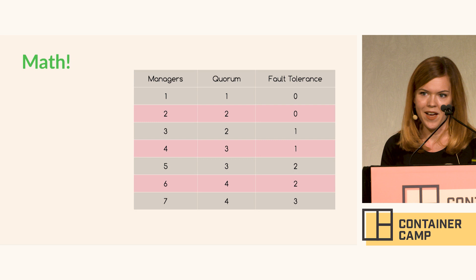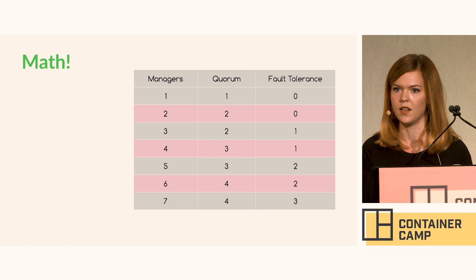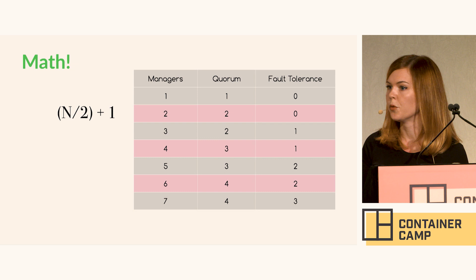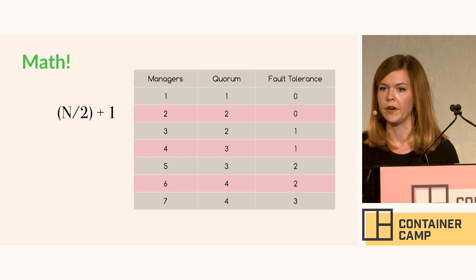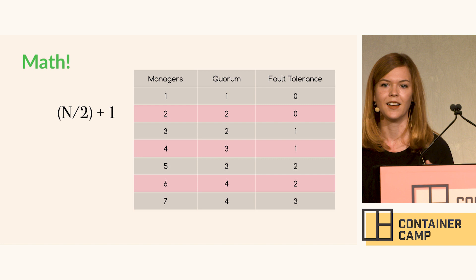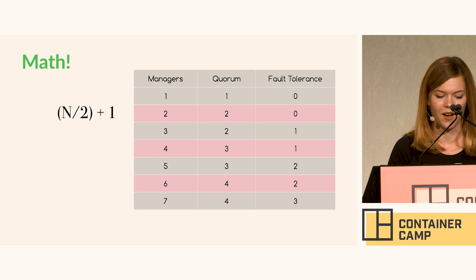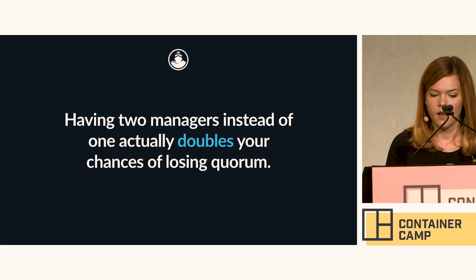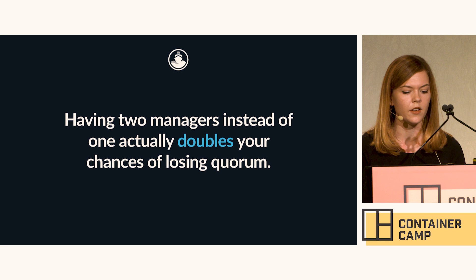Please, when you're selecting the numbers for your management group, use odd numbers. Don't use even numbers. One is totally acceptable if you're running a small cluster. Three is pretty normal, and if you're running something that makes money, five is a good number — that way you have more tolerance. If you want to do rolling updates and know one manager will be offline, you can still tolerate another failure during that maintenance period. Remember: having two managers actually doubles your chances of losing quorum.